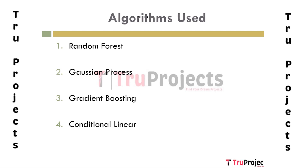Gaussian process is valuable in the context of steel plate thickness prediction as it allows the algorithm to account for variability in the data and provide a measure of confidence in the predictions. Gradient boosting is chosen because it sequentially builds decision trees, each correcting errors of the previous one, leading to a powerful ensemble model that excels at handling non-linear relationships. Conditional linear models are employed due to their interpretability and simplicity, providing a linear relationship between input features and output, aiding in understanding factors influencing steel plate thickness.